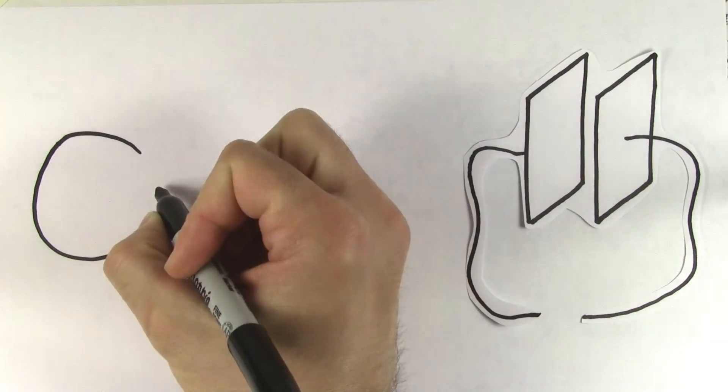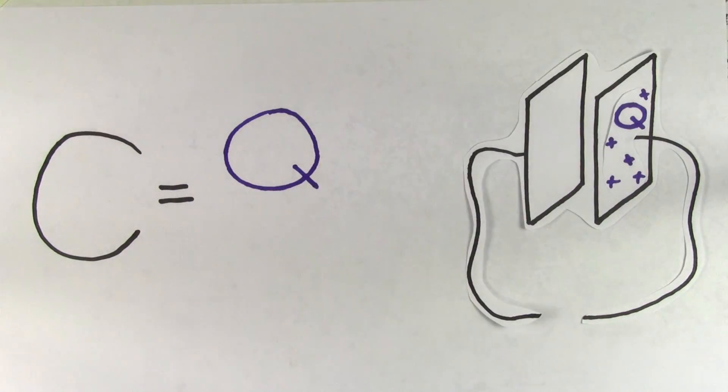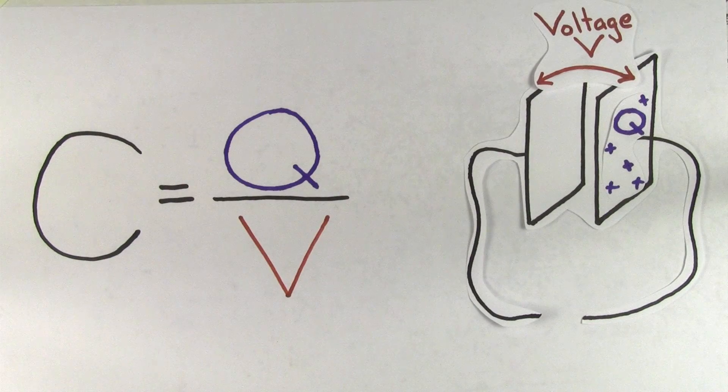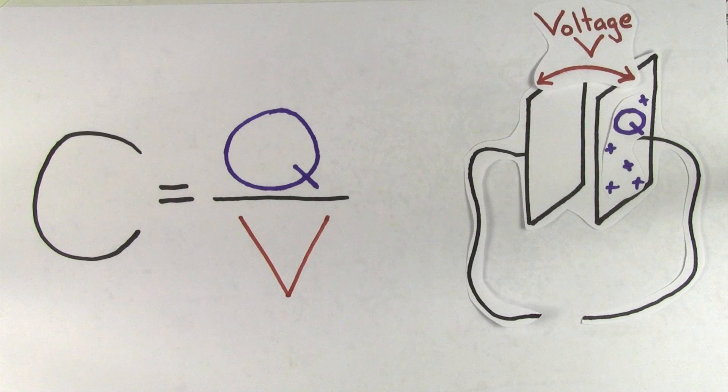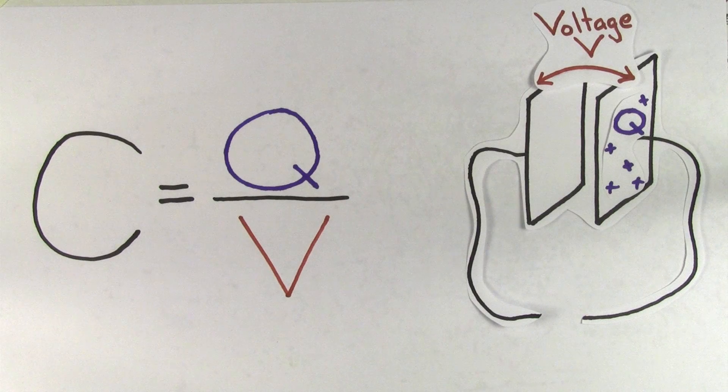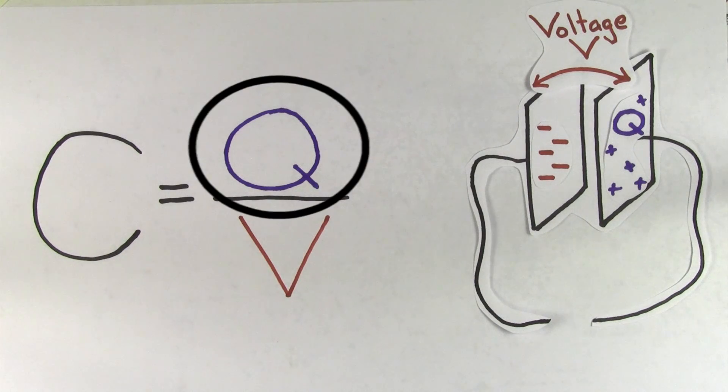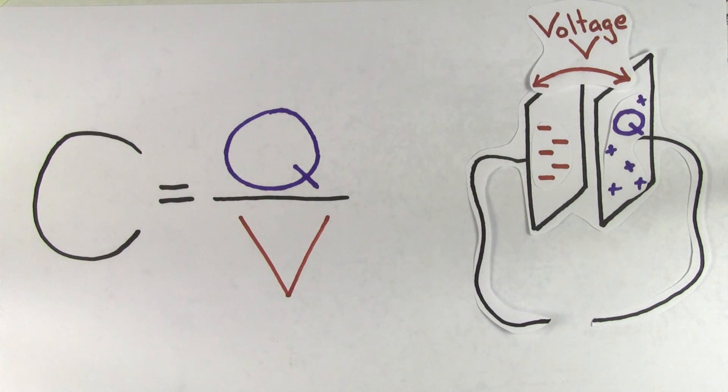The actual definition of capacitance is summarized by this formula. Capacitance equals the charge stored on a capacitor divided by the voltage across that capacitor. Even though technically the net charge on a capacitor is zero because it stores just as much positive charge as it does negative charge, the Q in this formula is referring to the magnitude of charge on one side of the capacitor.